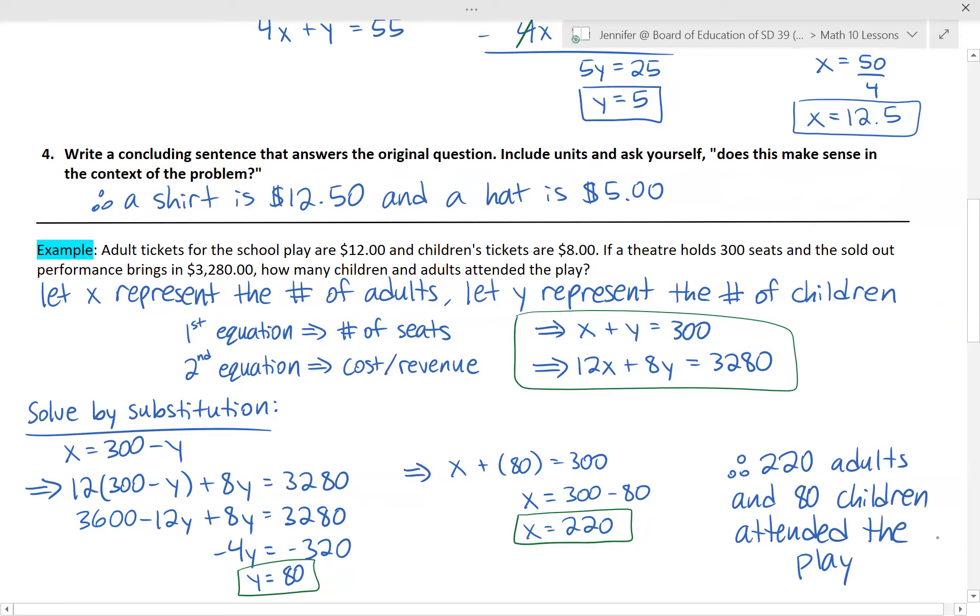So I write a concluding sentence, that means there's 220 adults and 80 children that attended the play. And then you ask yourself, does that make sense? I think that's pretty reasonable for this context, and I think we're finished.